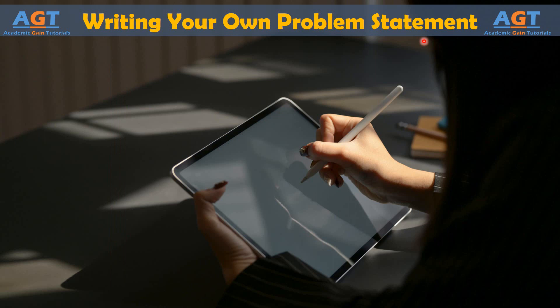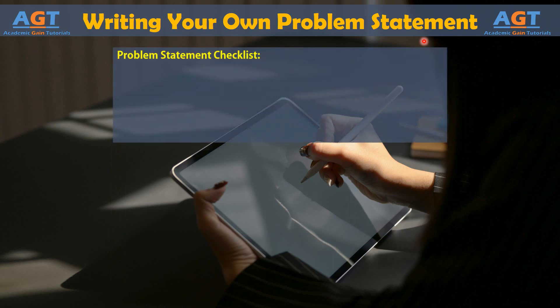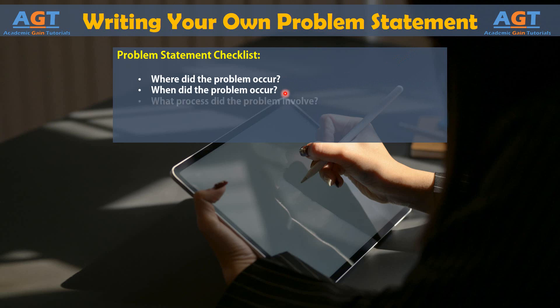Follow the problem statement checklist. Where did the problem occur? When did the problem occur? What process did the problem involve? How is the problem measured?